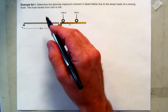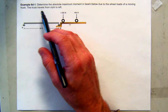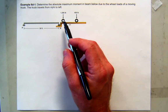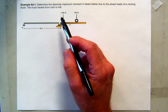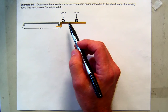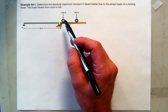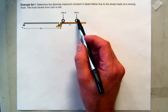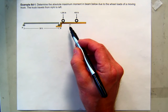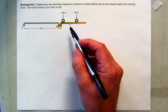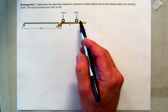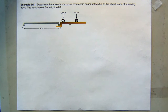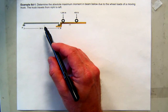Here's the first problem in this set. We're going to try to find the absolute maximum moment in this beam. We'll start with a pretty simple application: two point loads that could represent some kind of trailer or vehicle. The front load is 1200 pounds, the load to the right is 400 pounds, they are eight feet apart, and the vehicle is going to travel from the right side across to the left side.